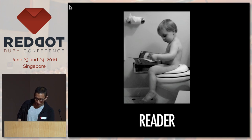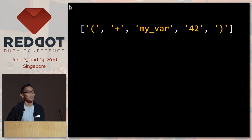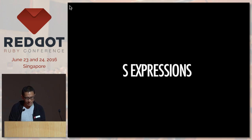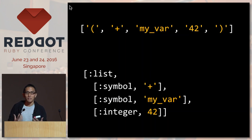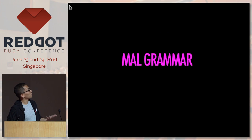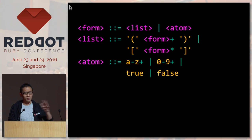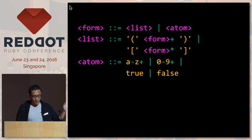The next phase is the reader. What the reader does is take our tokens and transform them into S-expressions. What are S-expressions? They're something from Lisp — basically nested arrays that add meaning to my tokens. Before we do that, I have to explain the grammar of the language because our implementation will be based on the grammar. I'm going to show this scary-looking thing, but don't worry, it's not very difficult to understand.